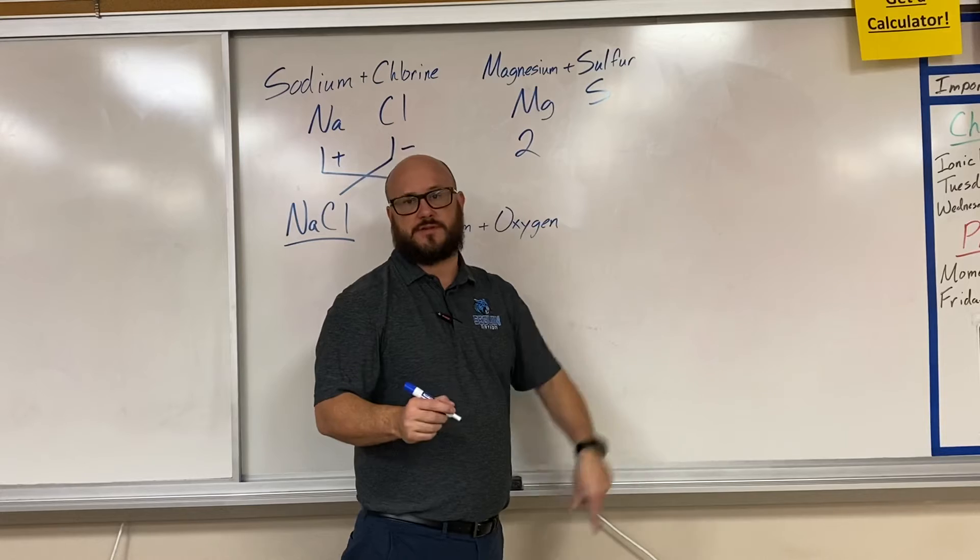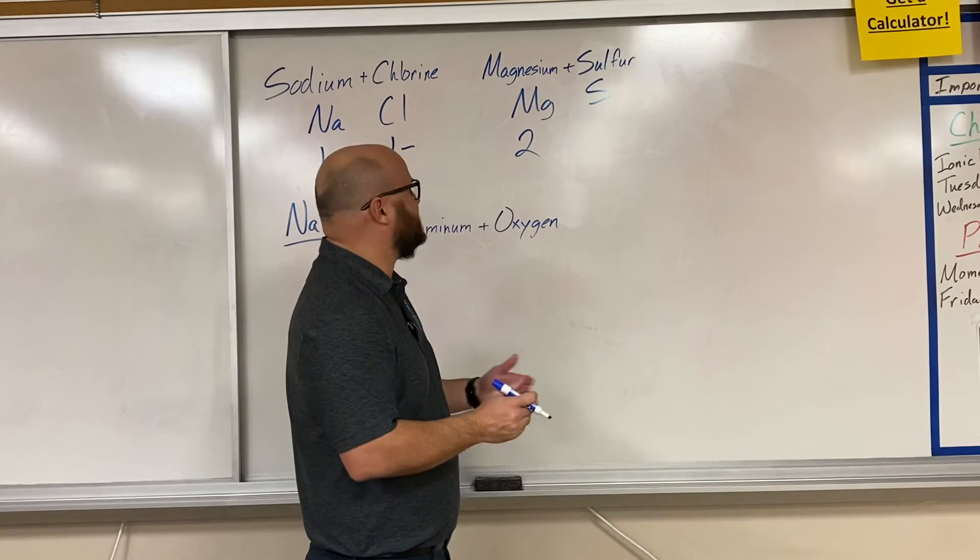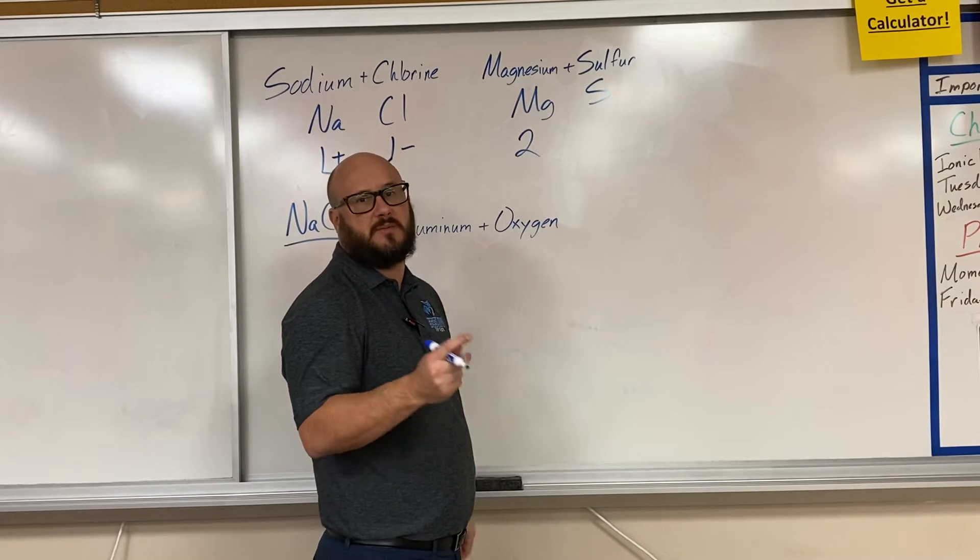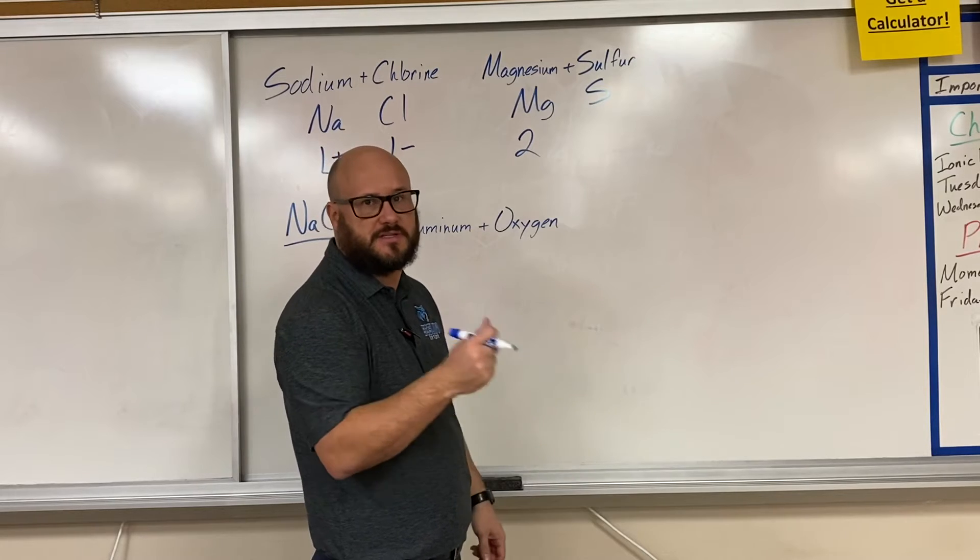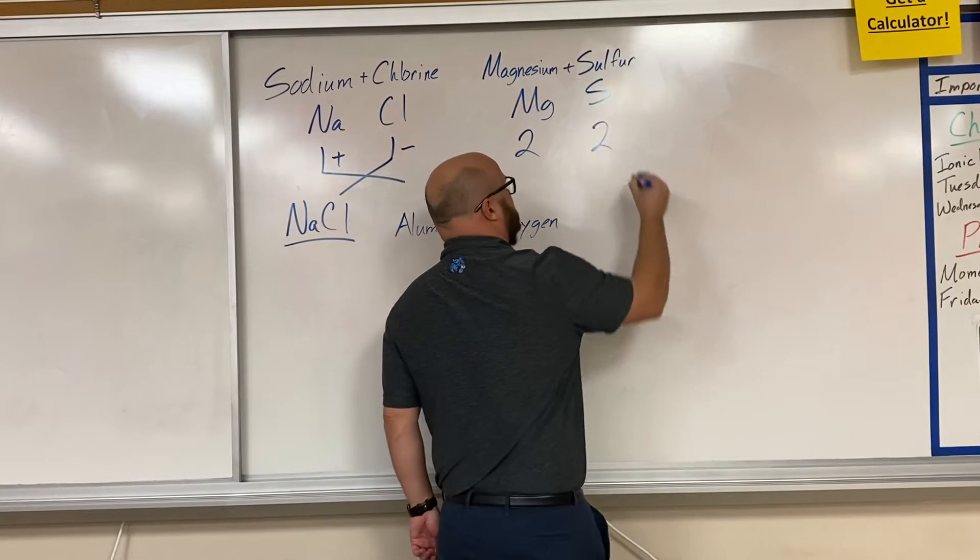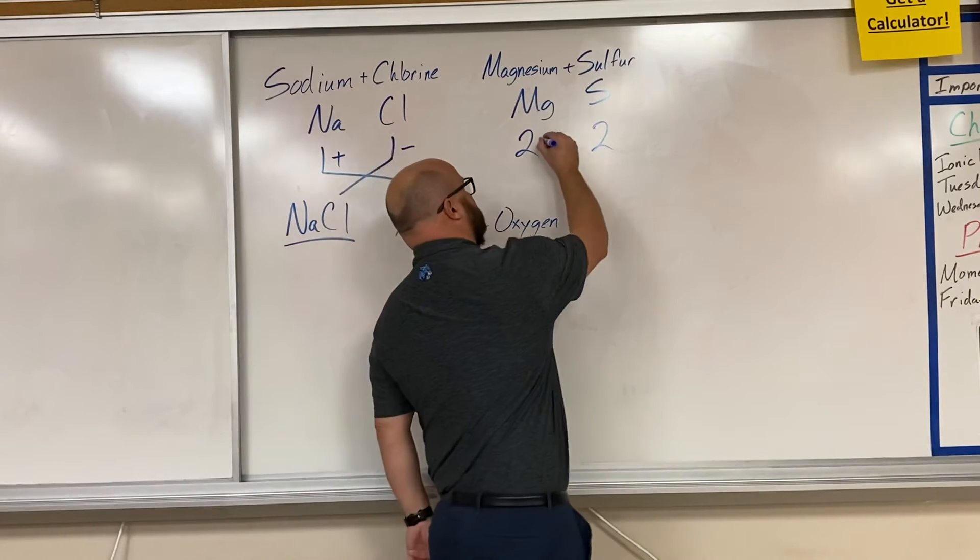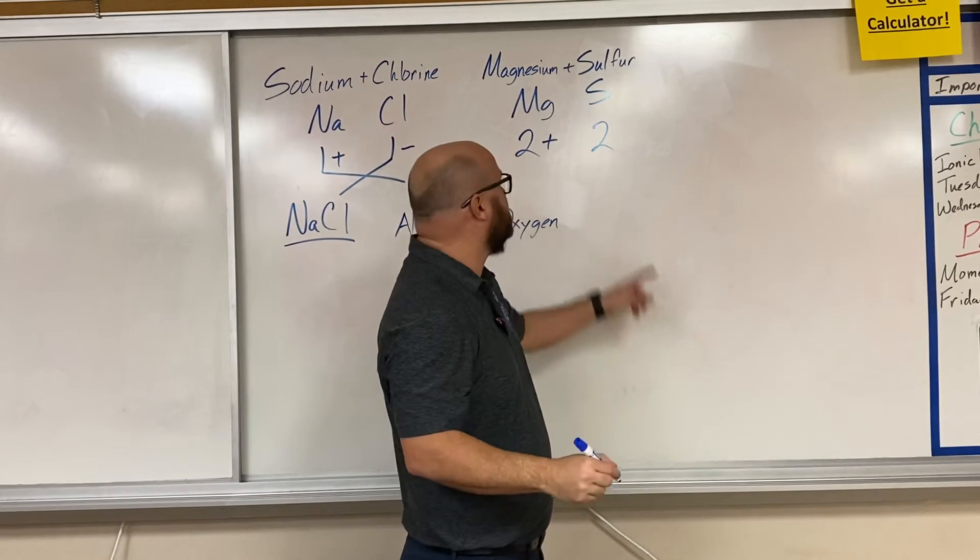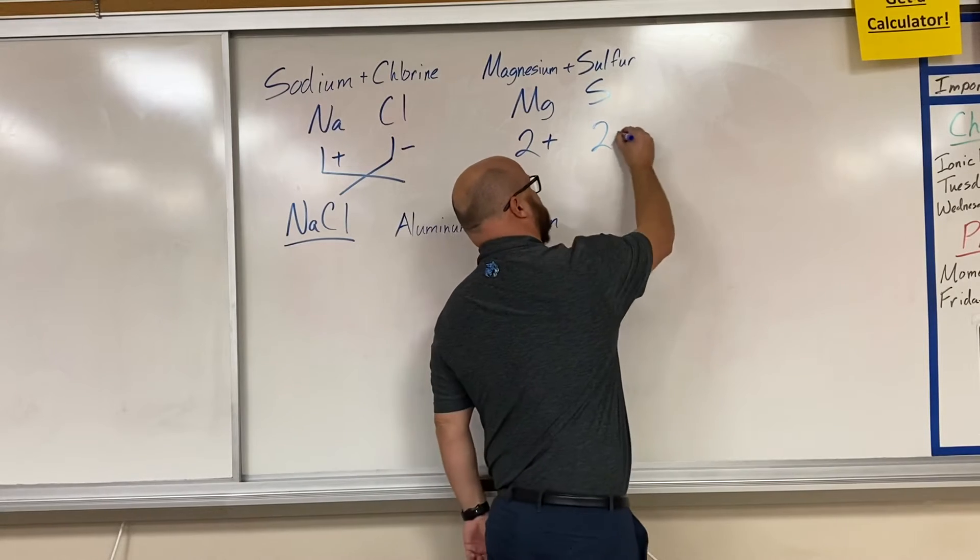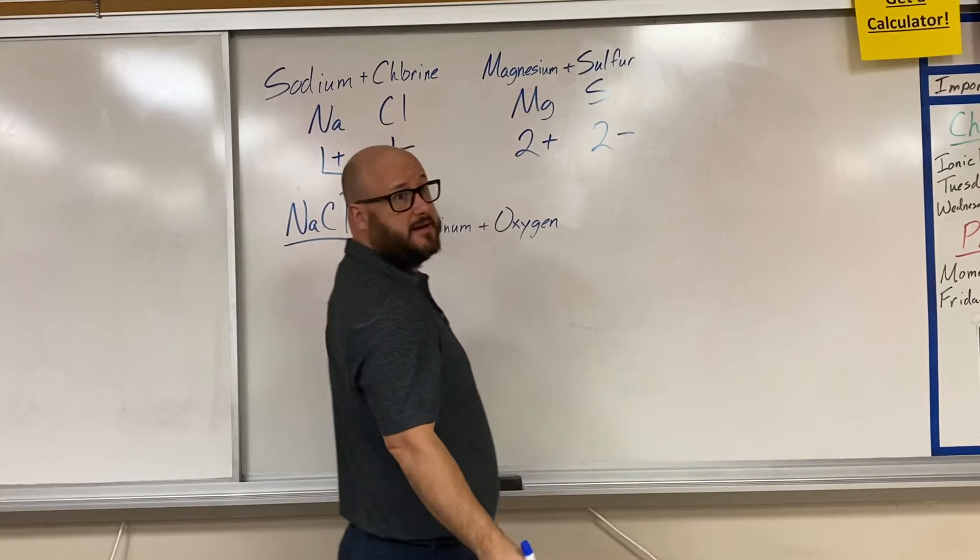Sulfur, on the other side, is in group 6A. It's going to be easier to gain 2 electrons than it would be to lose 6, so it's going to be 2 as well. Now magnesium is the metal, so it's going to be positive because it lost. Sulfur is the nonmetal, so it's going to be negative because it gained electrons.